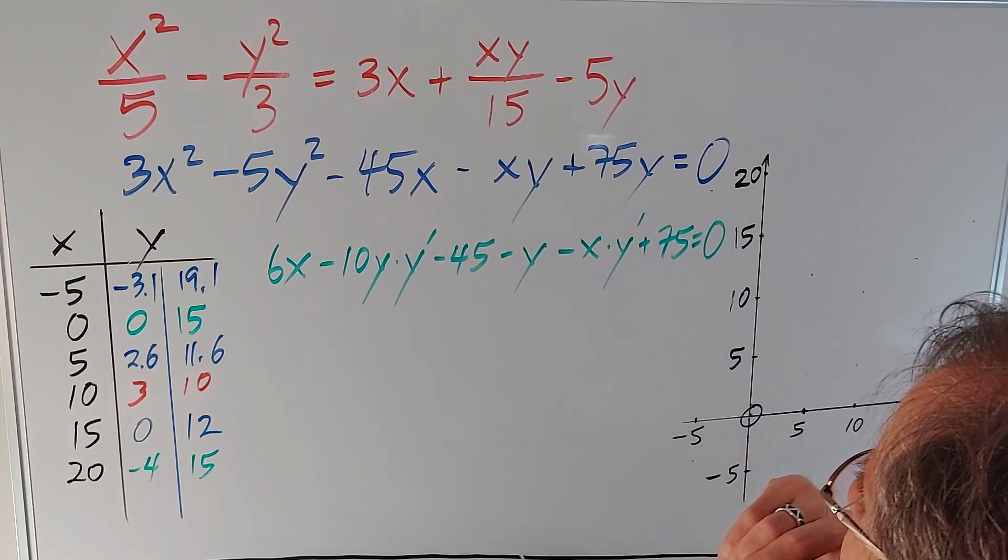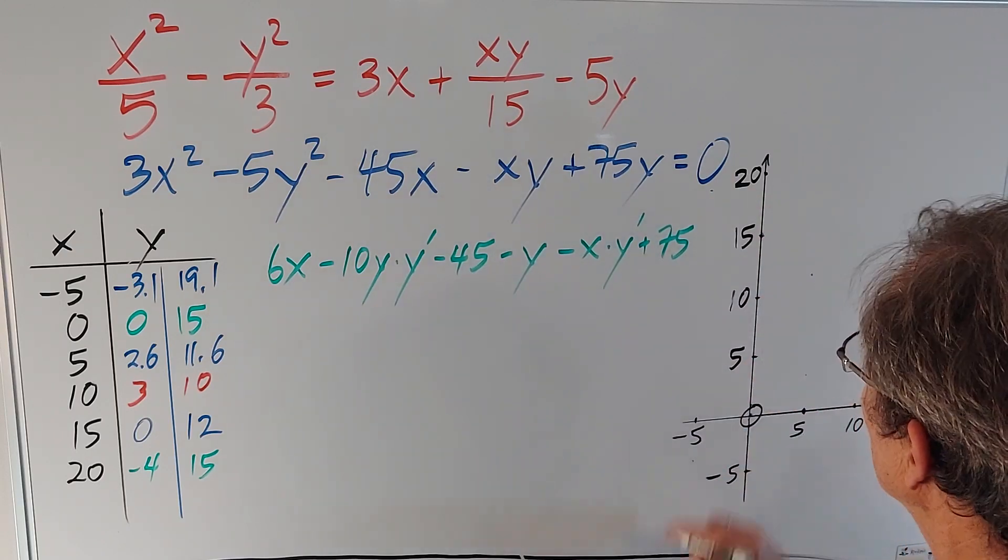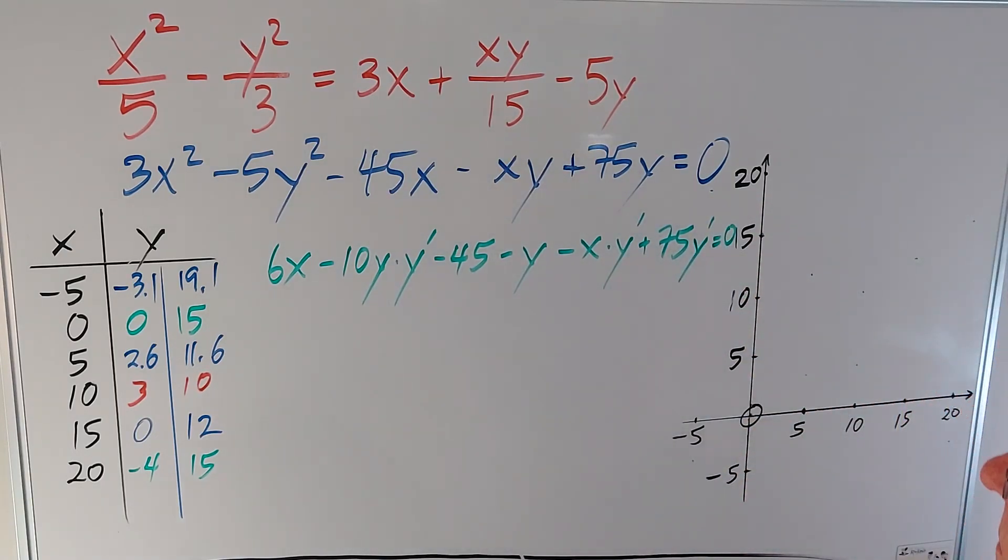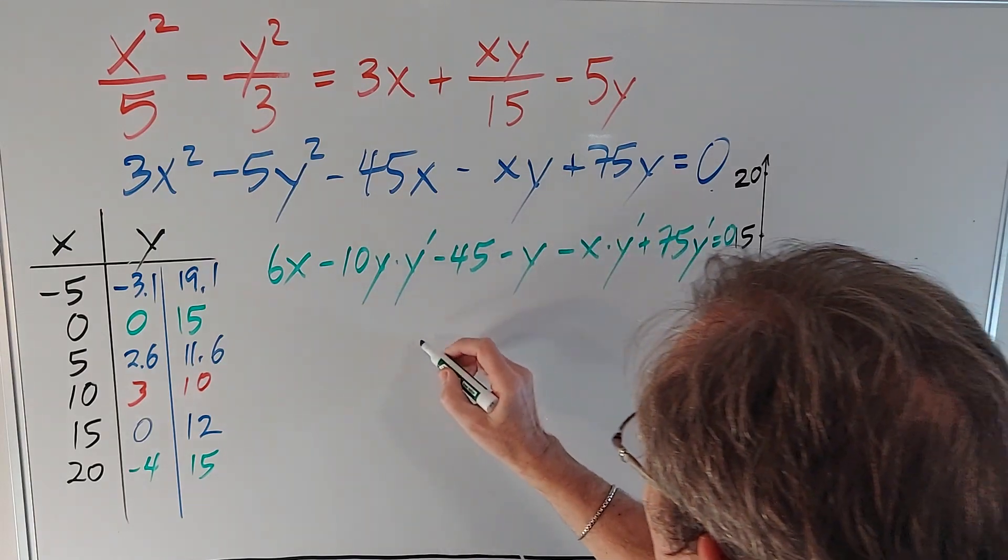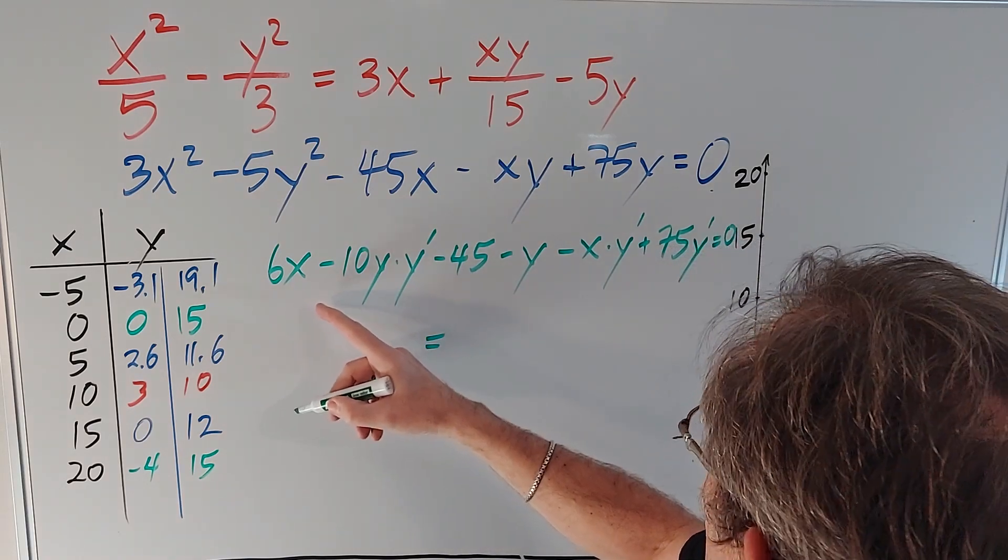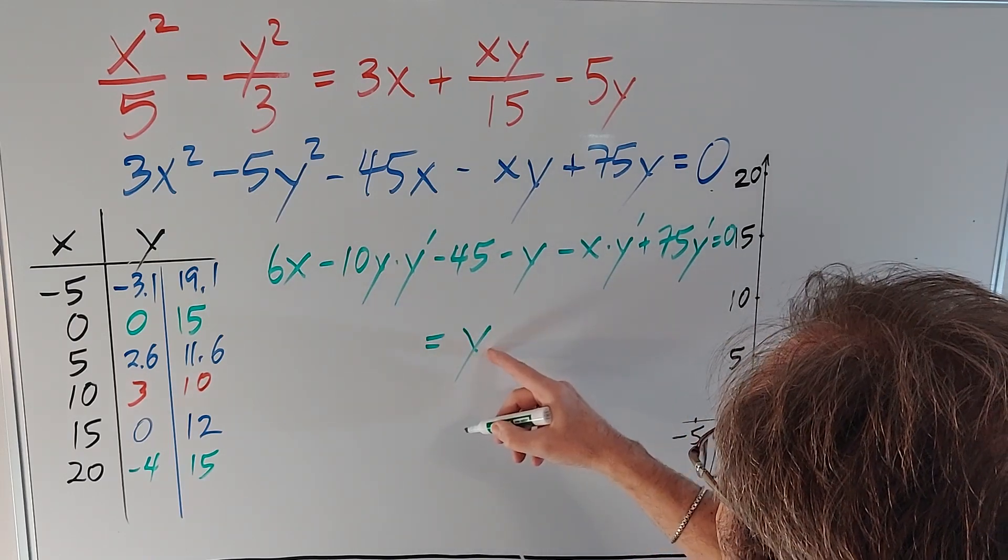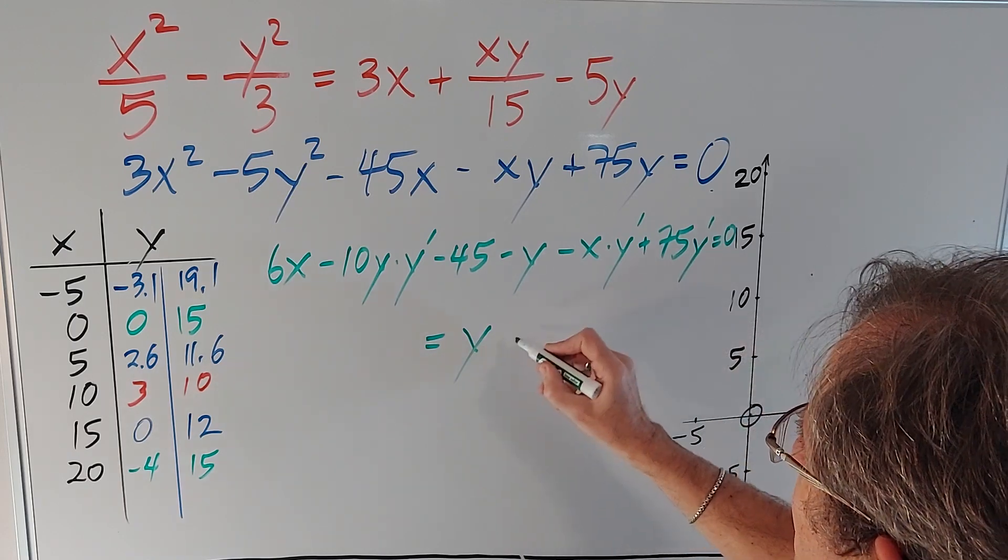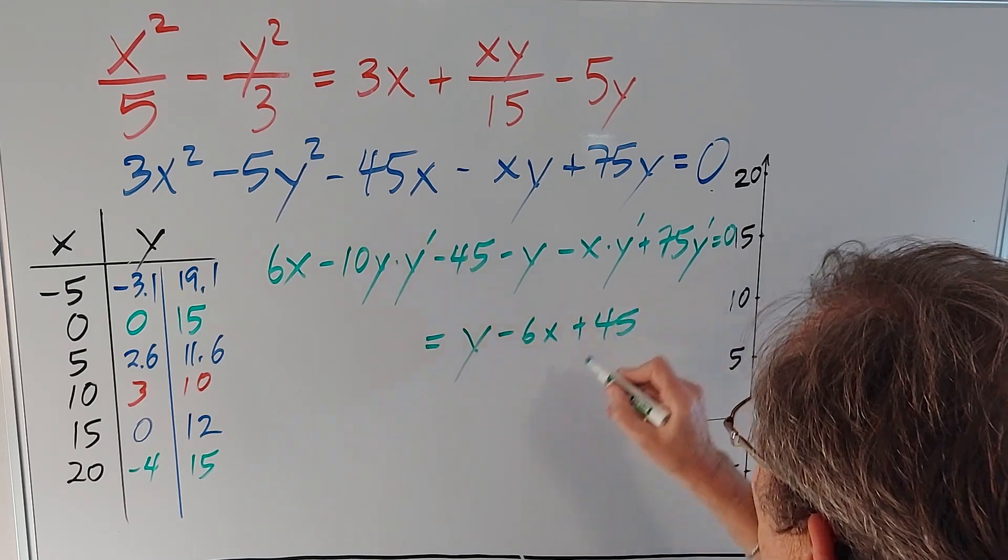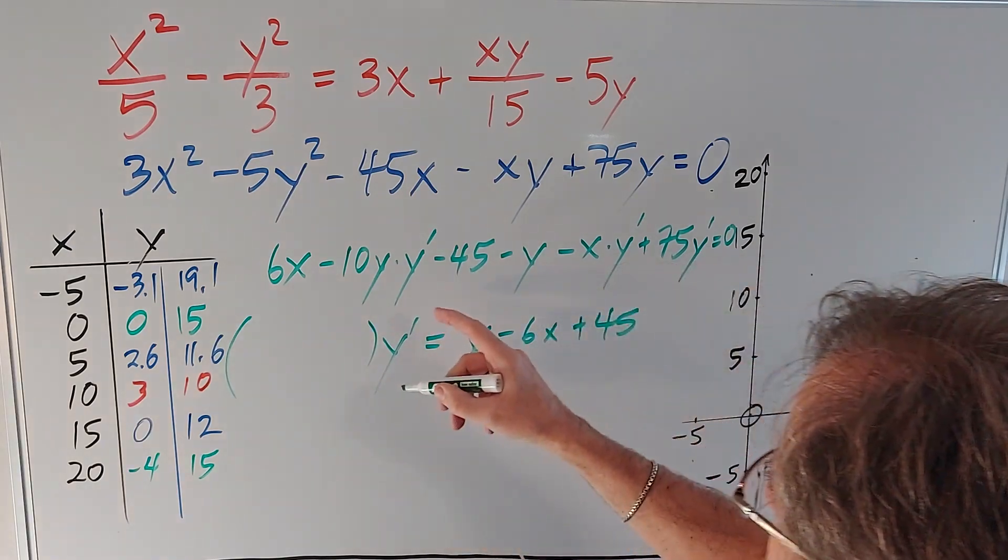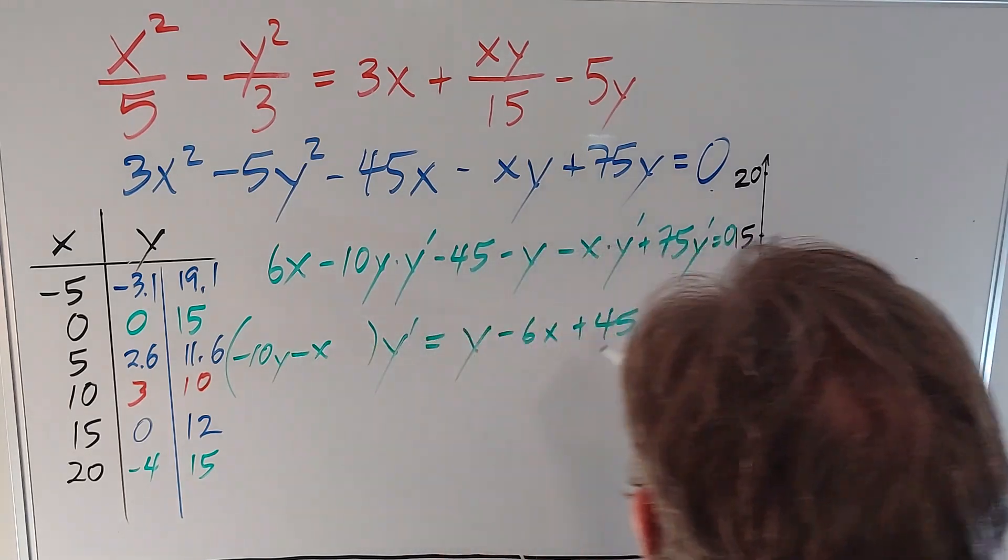So now what I want to do is get all the y prime terms together, get all the other terms together, bring them to the right-hand side. So if I do that, I'm going to get y - 6x + 45 equals y'(-10y - x + 75).